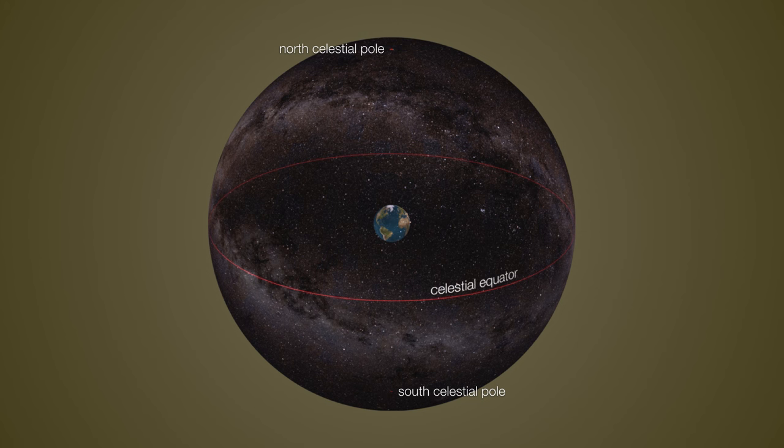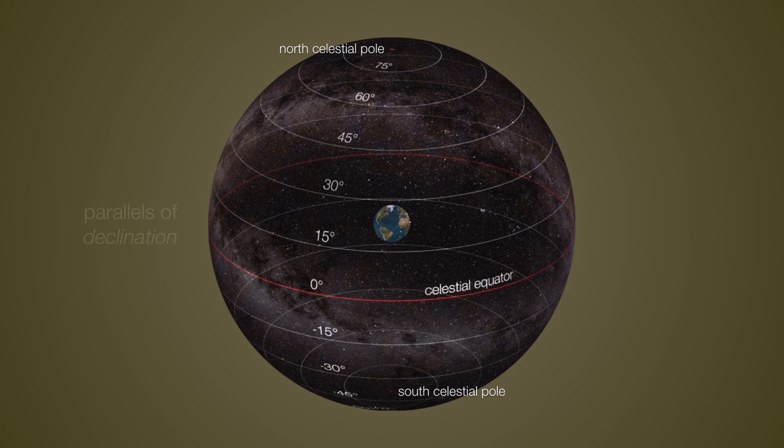And just as we did before with parallels of latitude, we can now draw parallel lines to the celestial equator, only we refer to these as parallels of declination. We measure declination as zero degrees from the equator all the way up to positive 90 at the north celestial pole, and then all the way down to negative 90 at the south celestial pole.